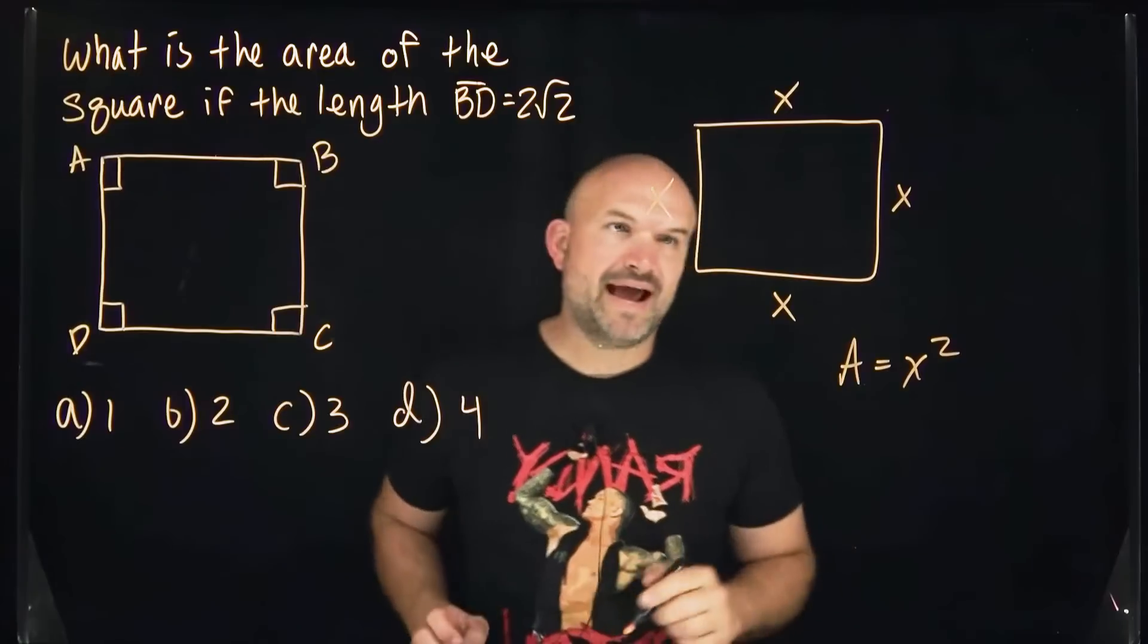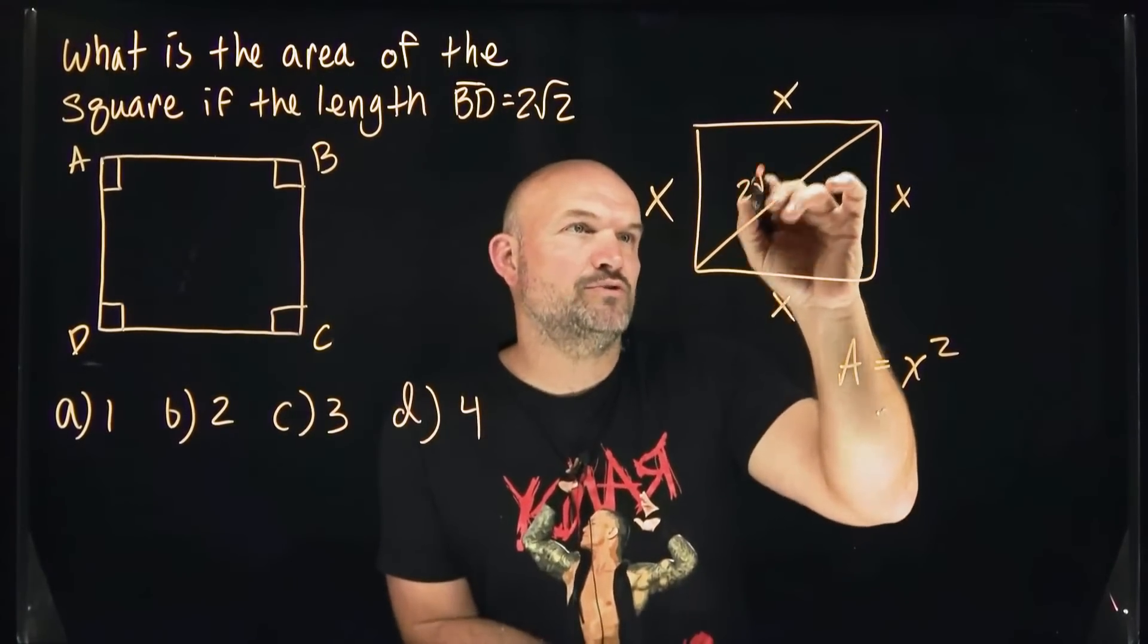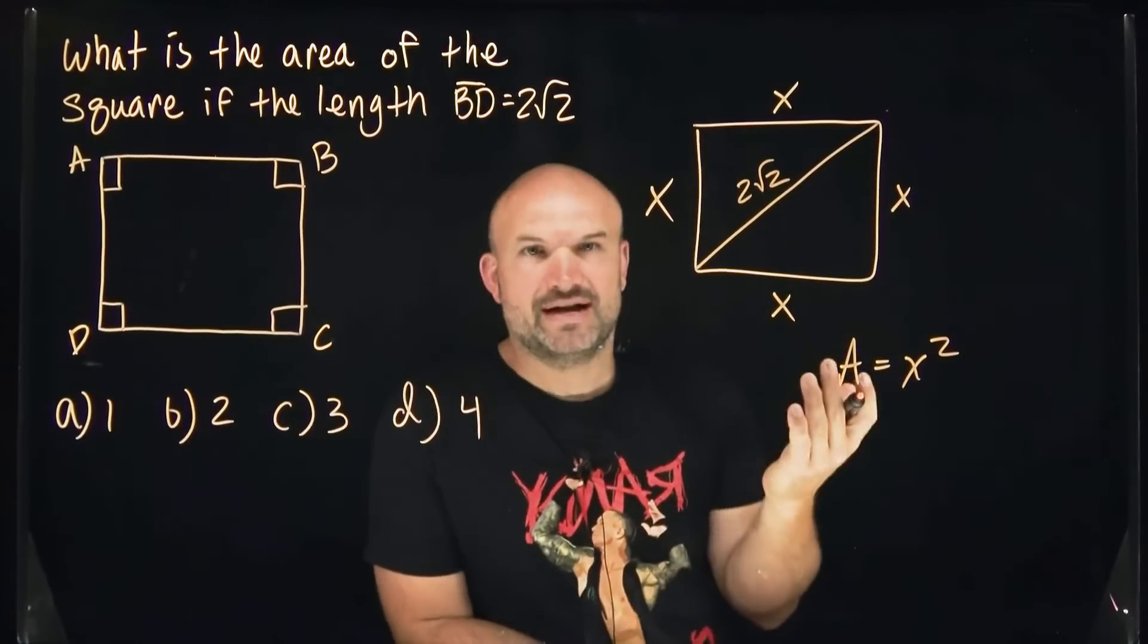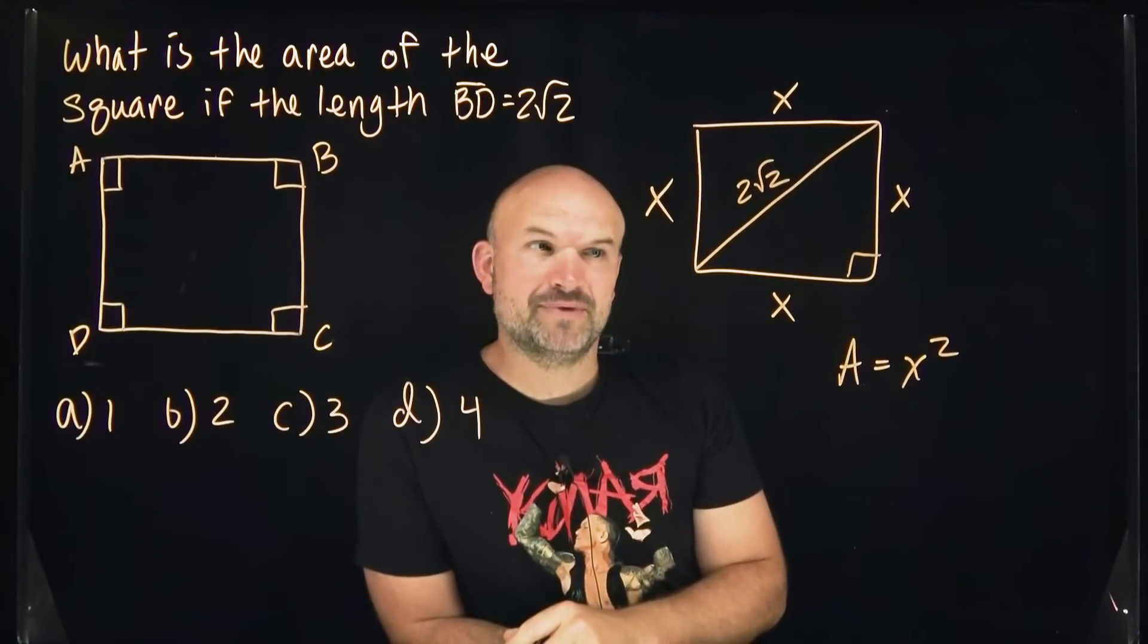But in this problem, we don't have that. We have a diagonal, and that diagonal is going to be 2 square root of 2. Now, when I draw the diagonal, what did we just create? We created a right triangle.